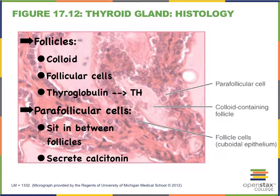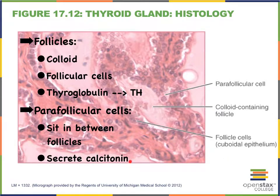In between the follicles are what we call parafollicular cells, and they're going to be producing the other hormone called calcitonin.